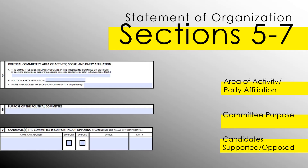Section 5 is where your committee will designate the area it will primarily operate in, along with any party affiliation and sponsoring entity, if applicable. A sponsoring entity is any person, group, organization, corporation, or association other than a political committee that contributes at least 33% of the total funding of a political committee. Section 6 is where the committee will declare a general or specific purpose for the committee being established — for example, to support Candidate A for the Illinois House of Representatives. Section 7 is where your committee will list any candidate or candidates it's established to support or oppose, along with the office or offices being sought.